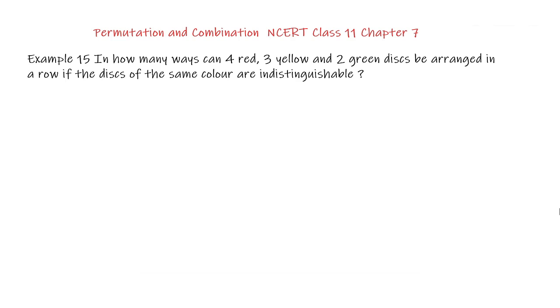So our solution to this question is when there are one or more items of same type then we use the formula of permutation of n items is factorial n upon p1 factorial into p2 factorial into p3 factorial where p1 are the number of items of one kind, p2 is number of the items of second kind and p3 is the number of the items of third kind.